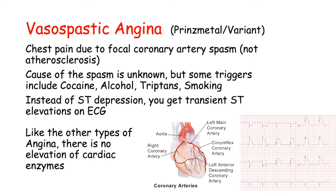The last type is vasospastic angina, also known as Prinzmetal or variant angina. It is very different from stable or unstable angina in that it does not follow the same pathogenesis — it is chest pain caused by focal coronary artery spasm and not by atherosclerosis. The cause of the spasm is unknown, but some triggers include cocaine, alcohol, triptans, and smoking.